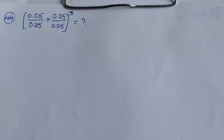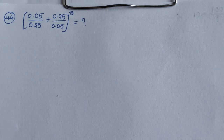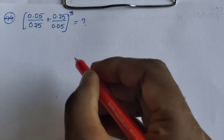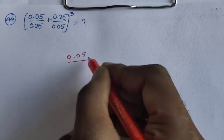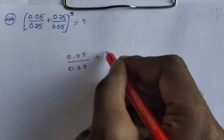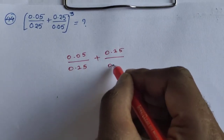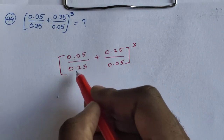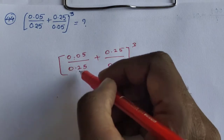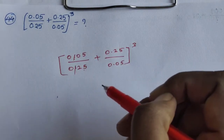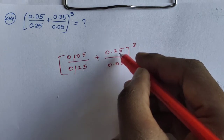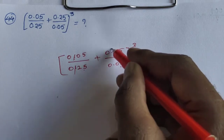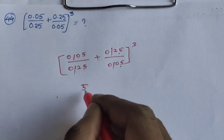Question 44: bracket 0.05 divided by 0.25 plus 0.25 divided by 0.05, bracket close, all cubed. So we have 0.05 by 0.25 plus 0.25 by 0.05 — all cubed.